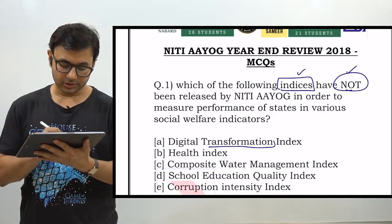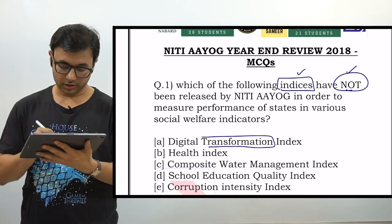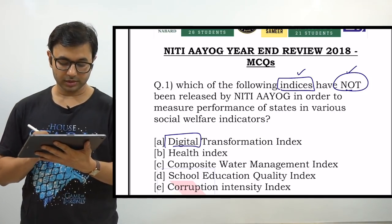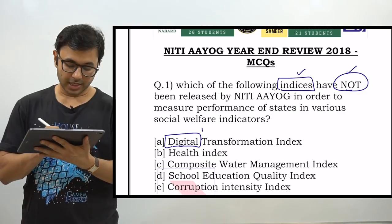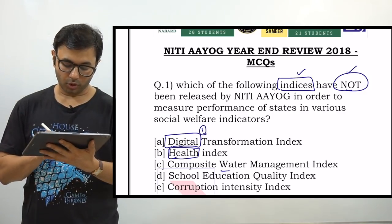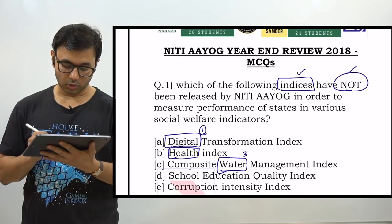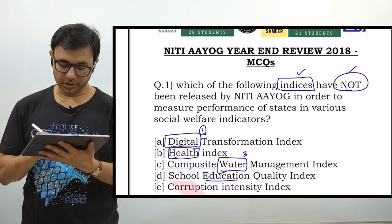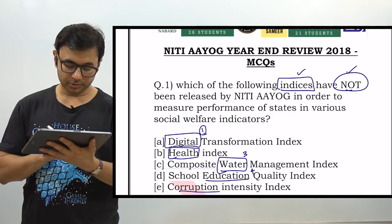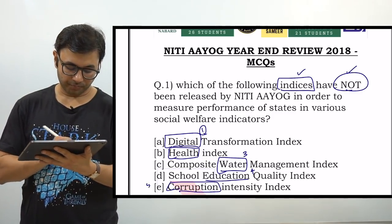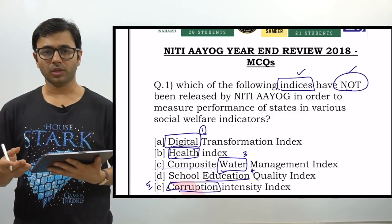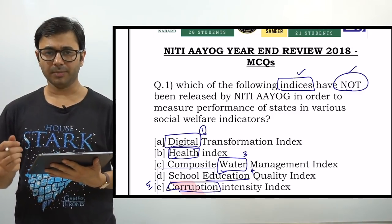Let's have a look at the options. Option A: Digital Transformation Index — keyword is 'digital.' Option B: Health Index — keyword is 'health.' Option C: Composite Water Management Index — keyword is 'water.' Option D: School Education Quality Index — keyword is 'education.' Option E: Corruption Intensity Index — keyword is 'corruption.' Try and answer this question on your own in the comment section below.